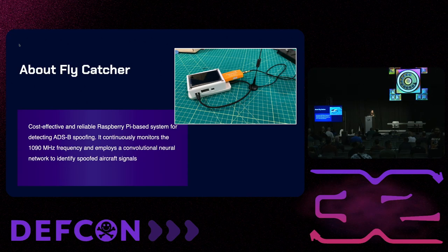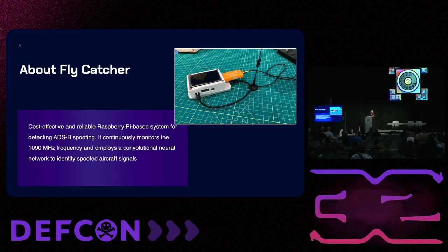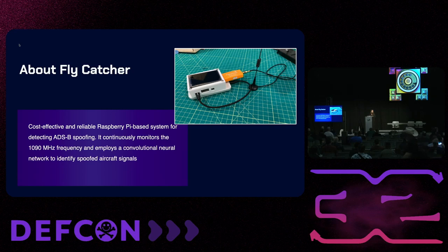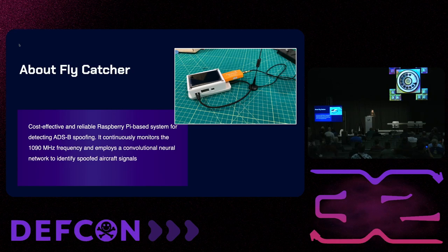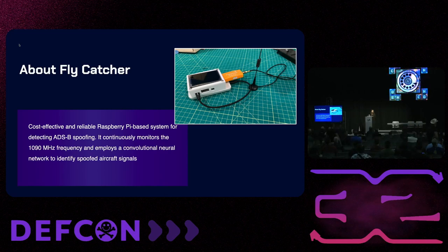So a quick overview of the device I created. It's called Flycatcher and it's made for effective ADS-B monitoring and detecting foreign instances of aircraft spoofing. It's low cost and reliable, created using the Raspberry Pi, compatible with multiple software-defined radio signal sources. I created my own convolutional neural network that parses ADS-B inputs in order to detect reliable and unreliable aircraft signals.